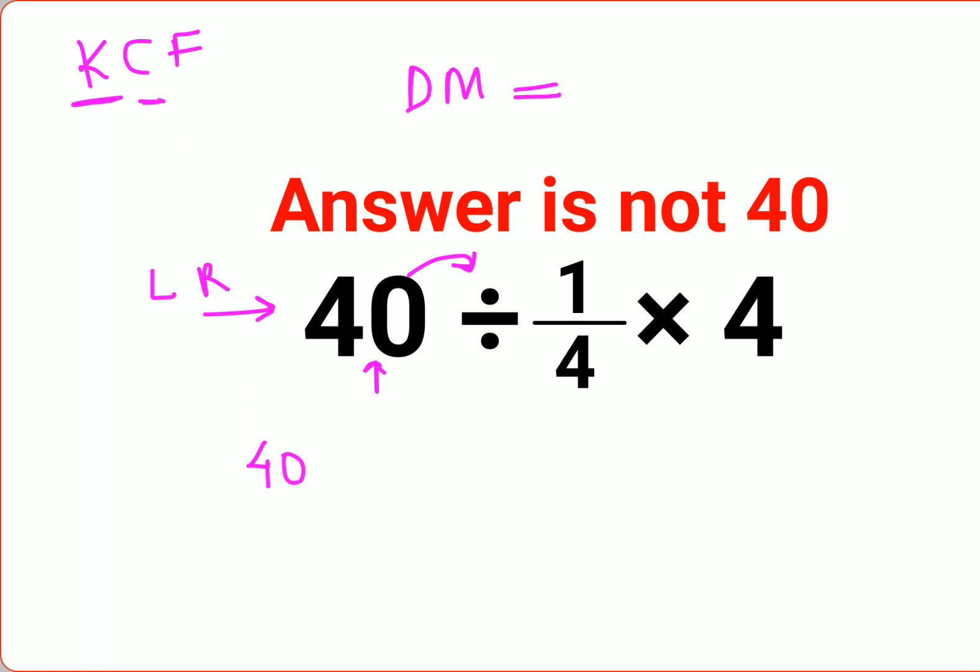F stands for flipping or taking the reciprocal of 1 upon 4, which is 4, and then multiplying the rest of the 4 as it is.